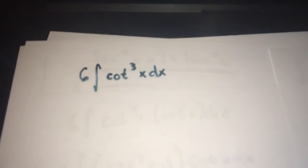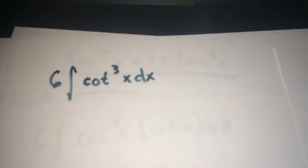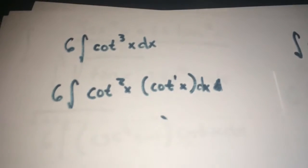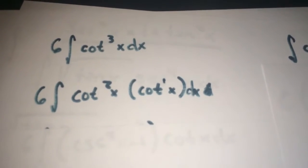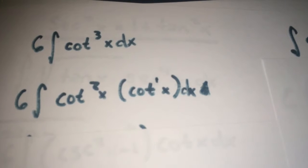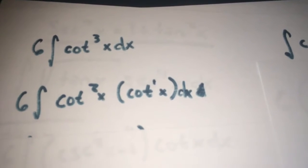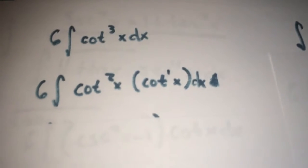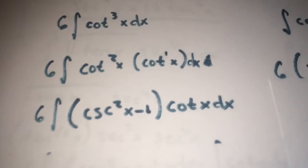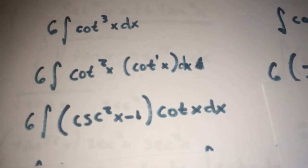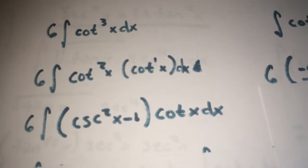The next problem starts with an odd power, but the coefficient is even. To get to the first step, I pull out a cotangent, giving 6 times the integral of cotangent squared x times cotangent x dx. From there, substitute in the identity for cotangent squared: 6 times the integral of (cosecant squared x minus 1) times cotangent x dx.